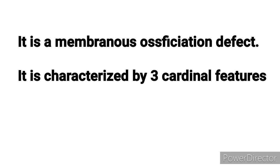These two bones are developed from the fibrous membrane, so it is called membranous ossification. When there is a defect in membranous ossification, it causes a rare syndrome called cleidocranial dysostosis. It is characterized by three cardinal features. Cardinal features are the major or primary signs of any disease which may help in diagnosis. The three main primary signs of cleidocranial dysostosis are as follows.